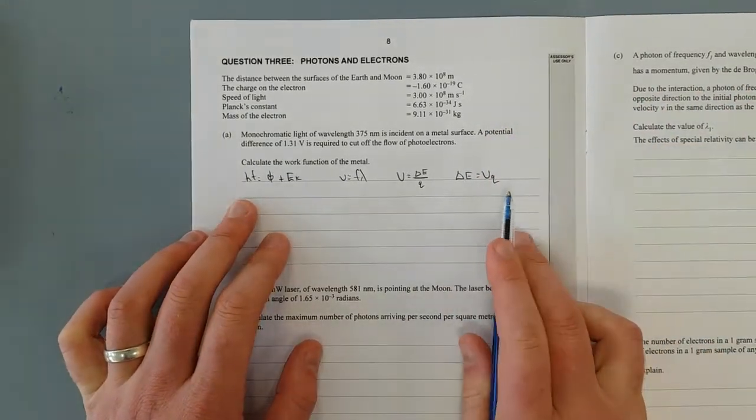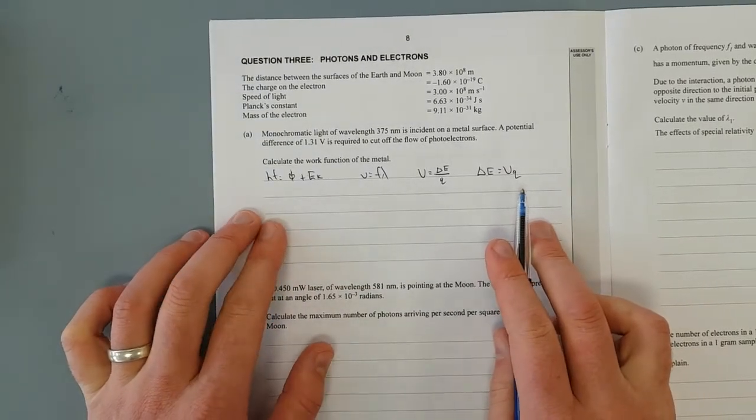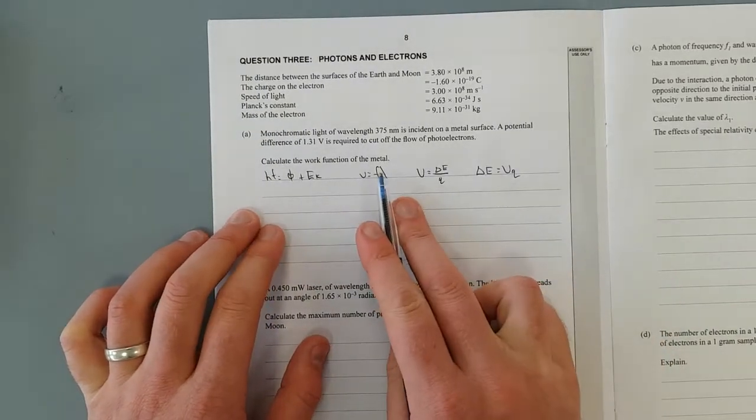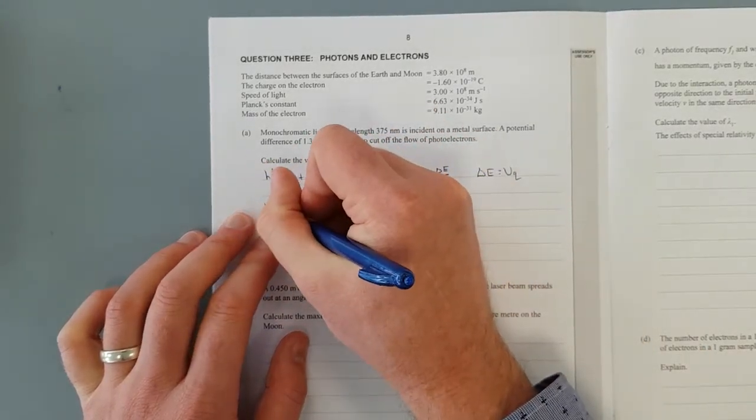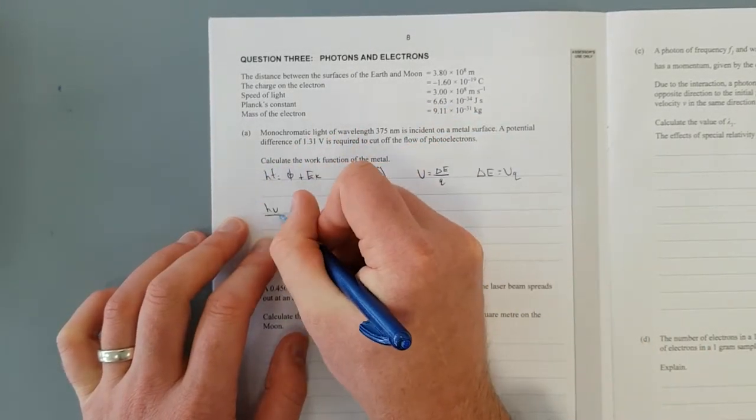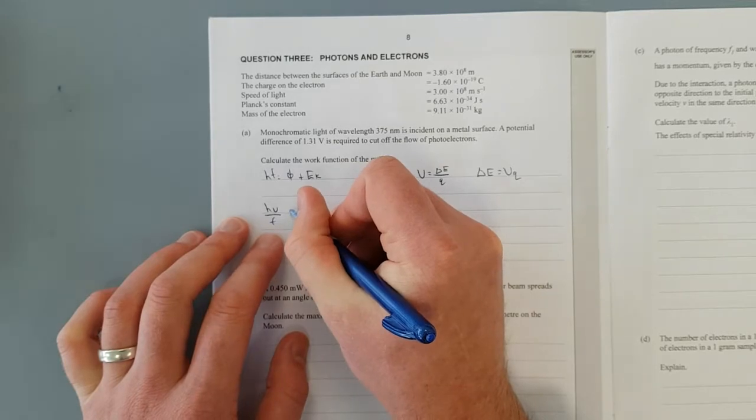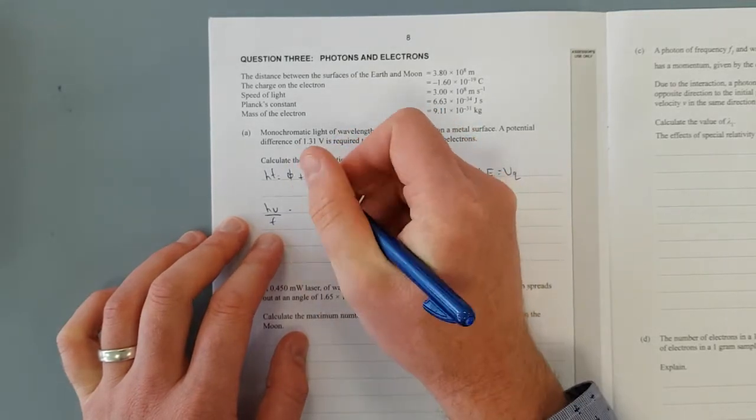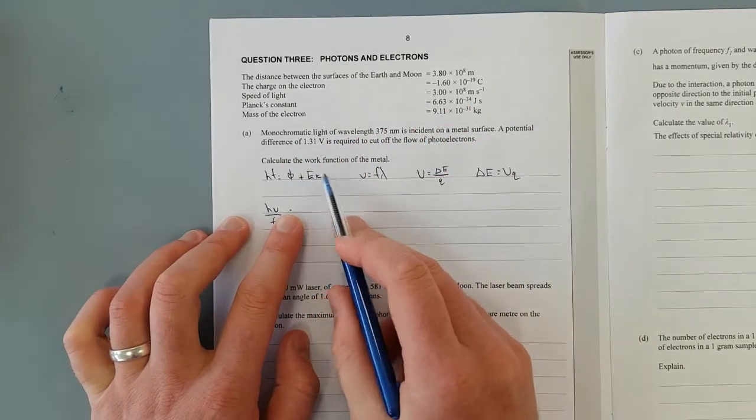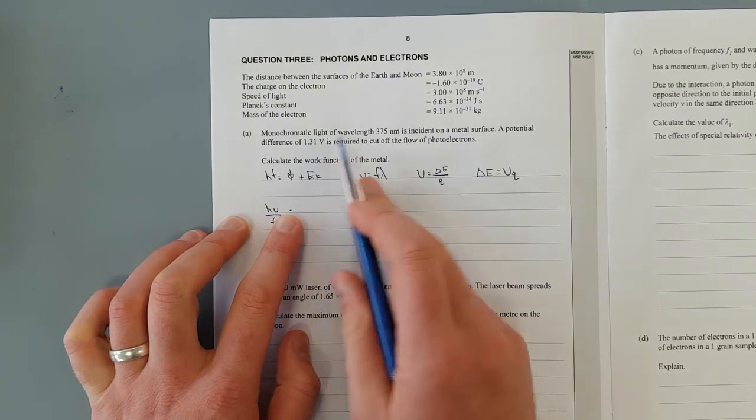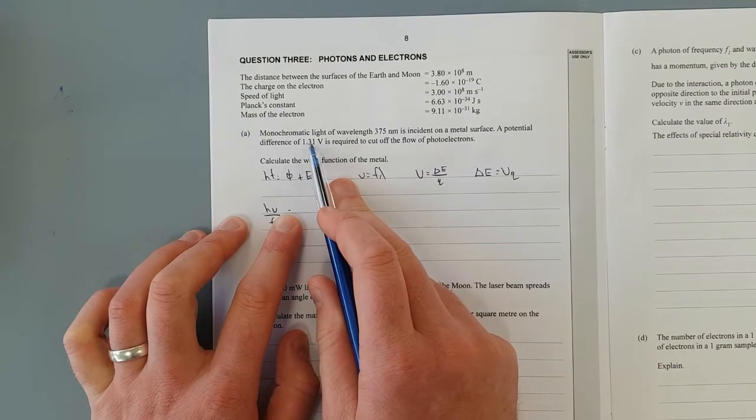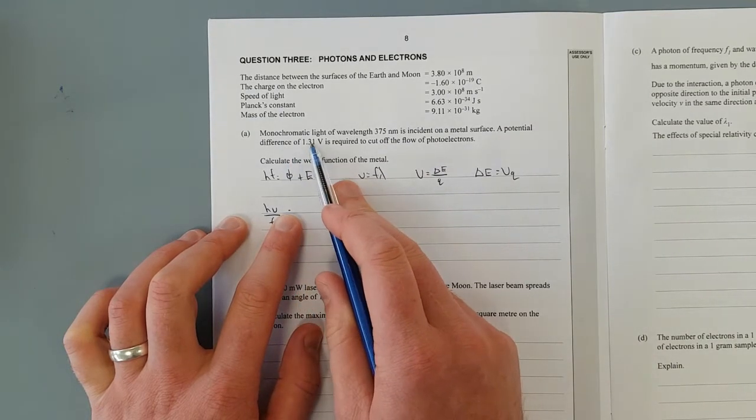So we were given the wavelength, so we'll rearrange this and chuck that in for F. In other words, HC over lambda, because F equals V over lambda, minus the kinetic energy, which is going to be this. So this potential difference is required to stop it. In other words, the kinetic energy gets up to here.